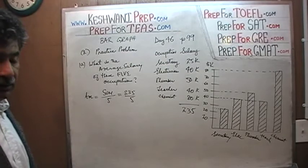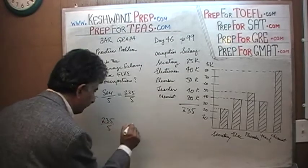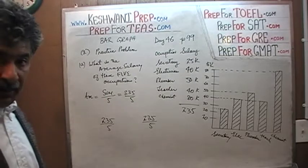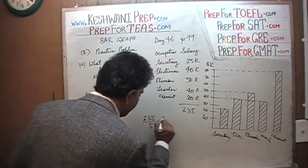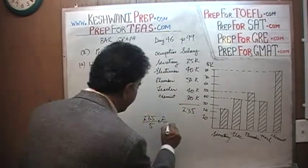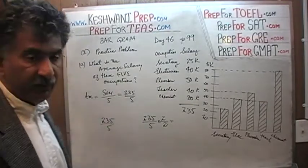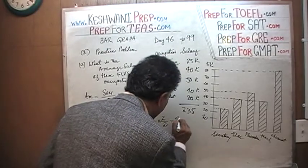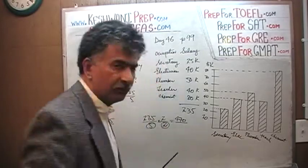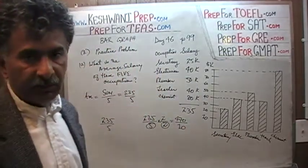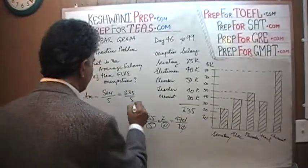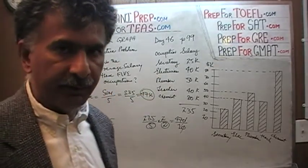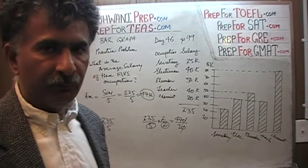When you divide 235 by 5, there are two ways you can go about it and I'm going to show you both. One is to actually divide it out. The other is a quick and dirty method: multiply the top and the bottom by two. Two times 235 — two hundred times two is four hundred, and thirty-five times two is seventy, so it's 470. And in the bottom we end up with five times two, which is ten. Dividing anything by ten is very simple — just knock out a zero. So the average salary of the five professions is $47,000.